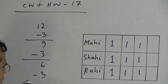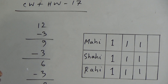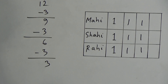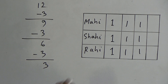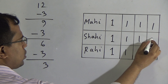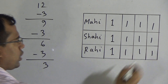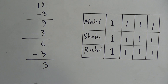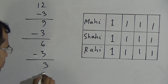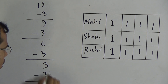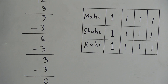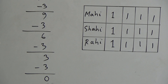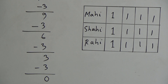Now I have 3 chocolates and I will give 1 chocolate to Mahi, another 1 chocolate to Shahi, and another 1 chocolate to Rahi. So I have to subtract another 3 from these 3. Now 3 minus 3 equals 0. That means I have finished all of my chocolates. Now I have no chocolates.